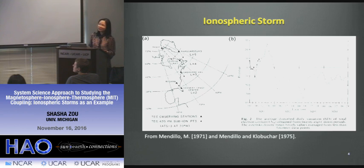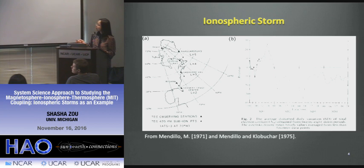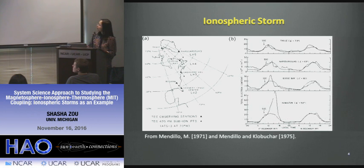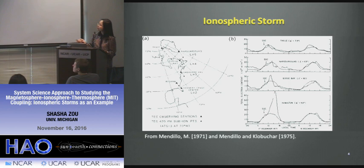Ionospheric storms have a long history. Going back to a classic paper by Mendillo in 1970 — published in Nature — he used one receiver along the east coast and studied about 30 geomagnetic storms using superposed epoch analysis. During the first day of a storm, ionosphere densities increase; in subsequent days, densities decrease. People gave these phases the names positive phase and negative phase. In subsequent years, more receivers were added, enabling study of latitudinal dependence: at lower latitudes you can have a positive phase while at higher latitudes it may already be in the negative phase.